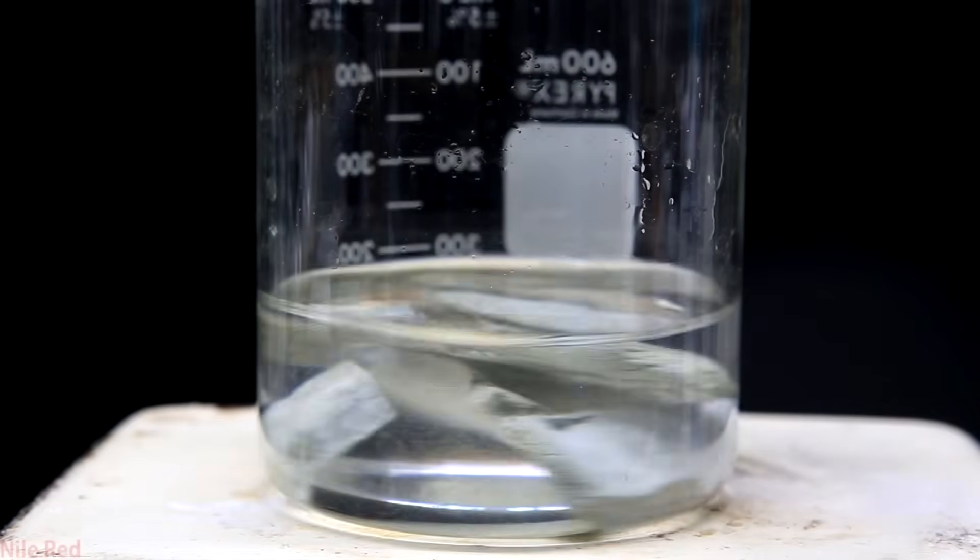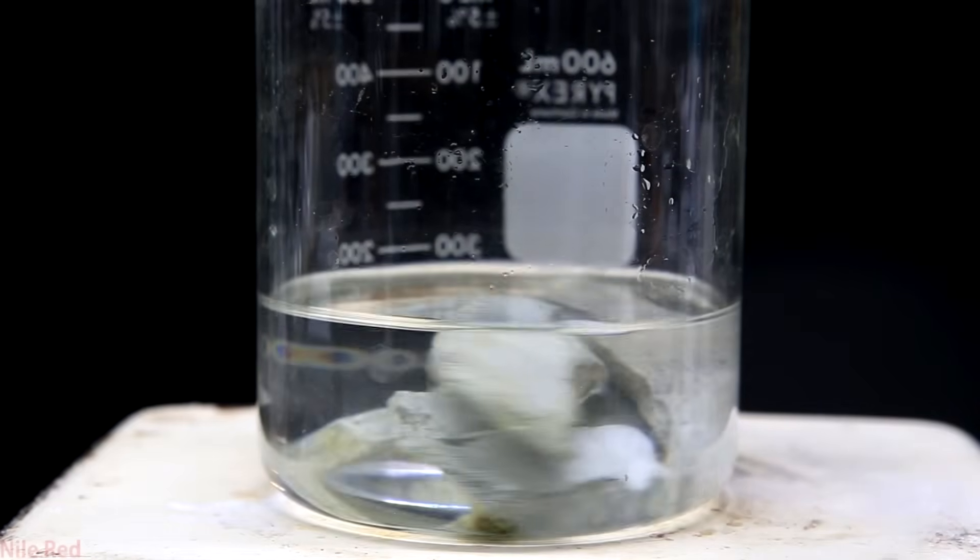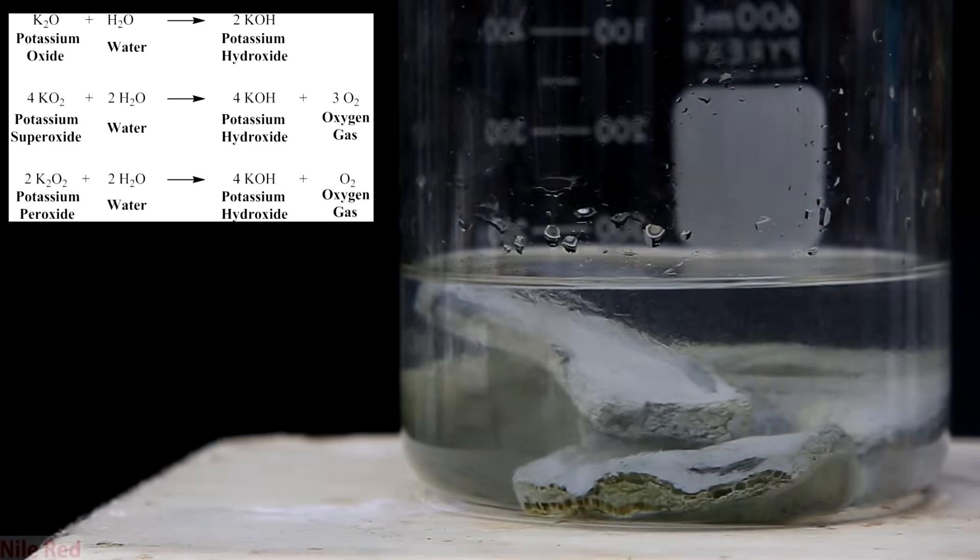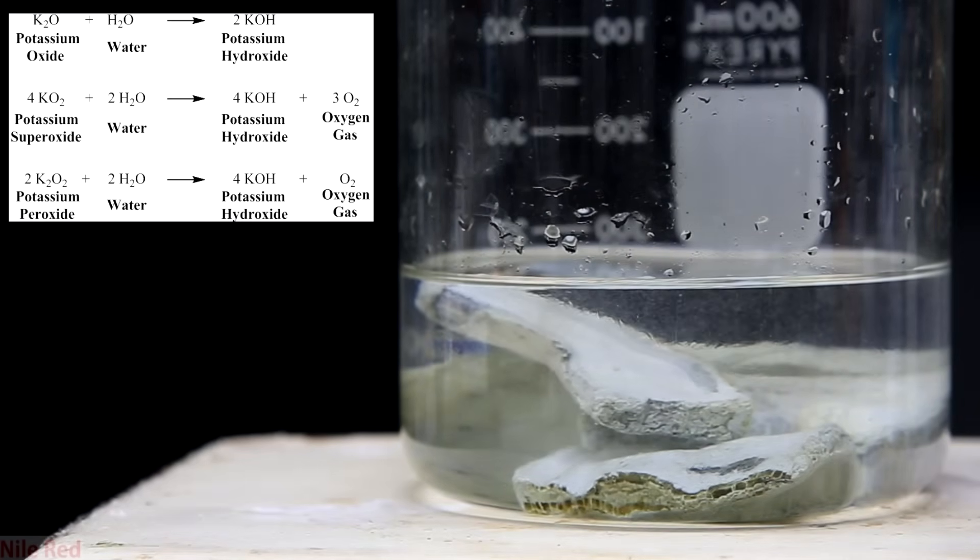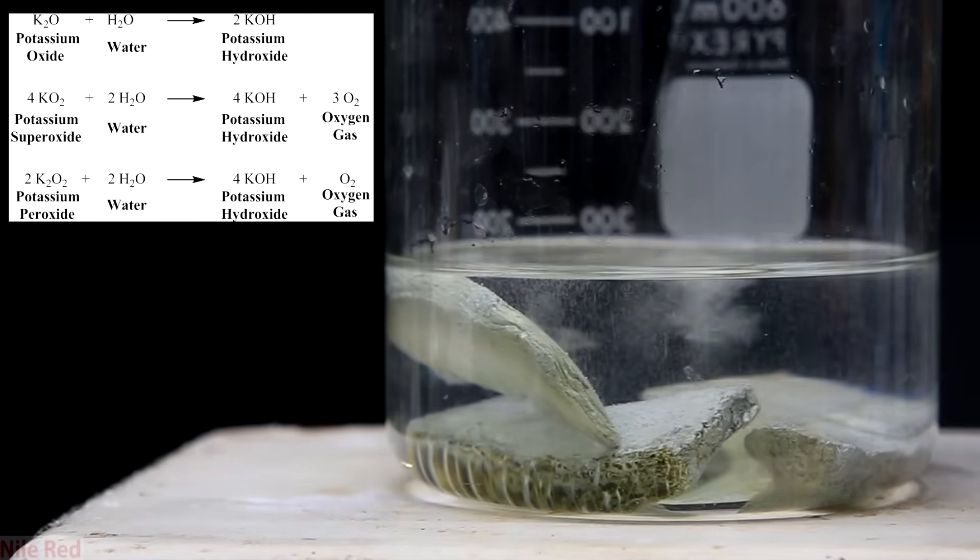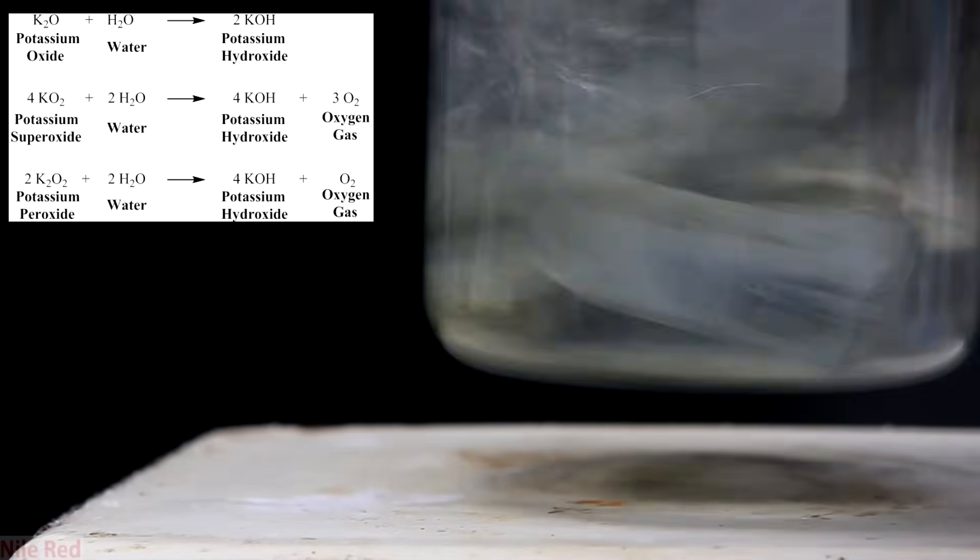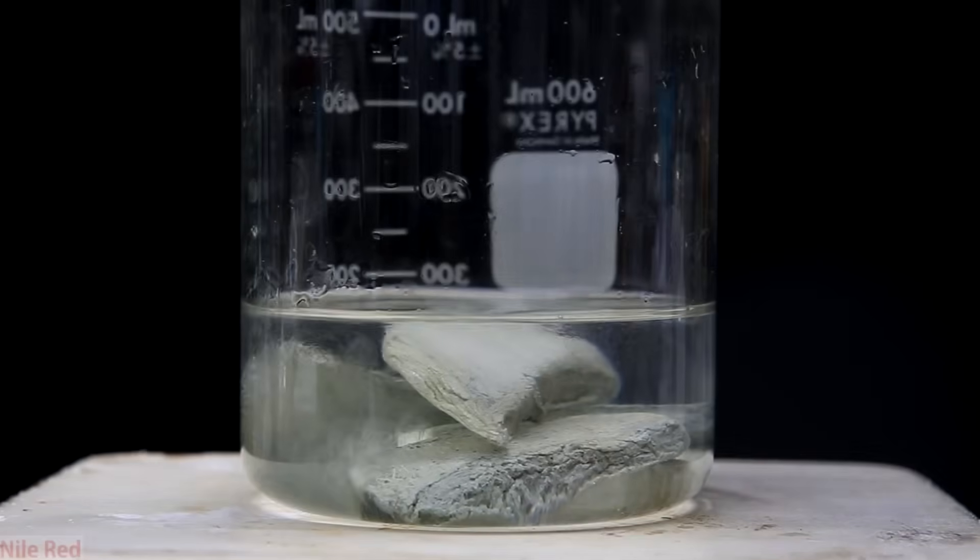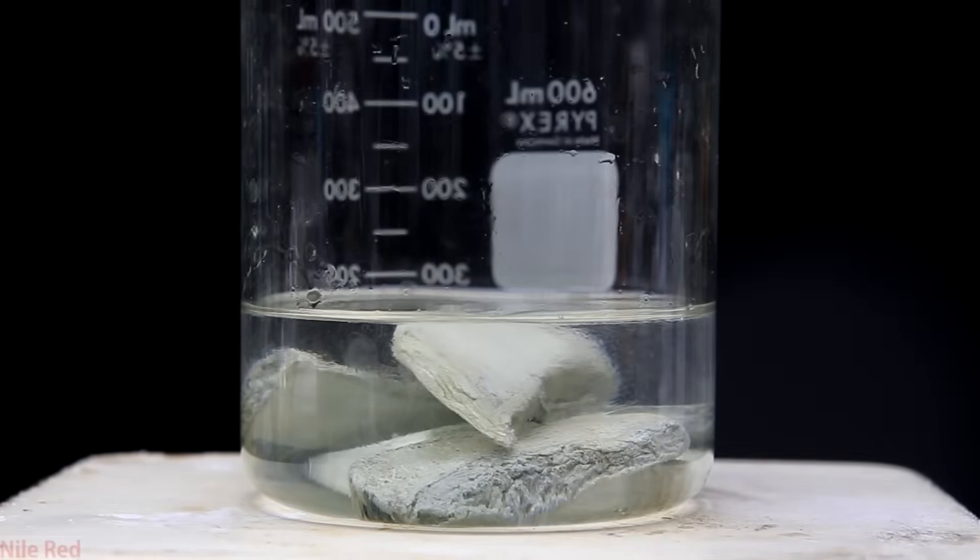I'll start with what I know for certain and then I'll move on to the more theoretical part. So this 99% isopropanol also has 1% water. It's very well documented that all of these oxides will react with water to form potassium hydroxide and in the case of the peroxide and superoxide it will also produce oxygen gas. So letting it sit with this very small amount of water, these oxides can react and they can be destroyed.